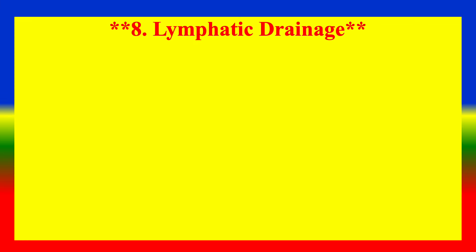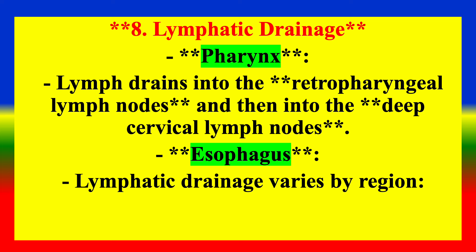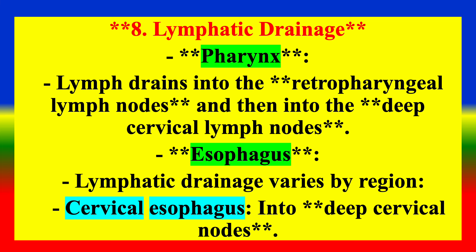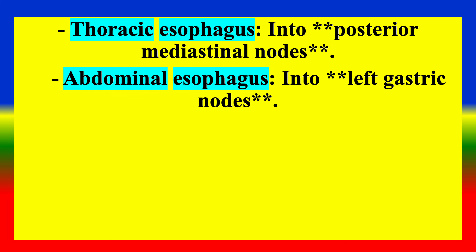Lymphatic Drainage — Pharynx: Lymph drains into the retropharyngeal lymph nodes and then into the deep cervical lymph nodes. Esophagus: Lymphatic drainage varies by region — cervical esophagus into deep cervical nodes; thoracic esophagus into posterior mediastinal nodes; abdominal esophagus into left gastric nodes.